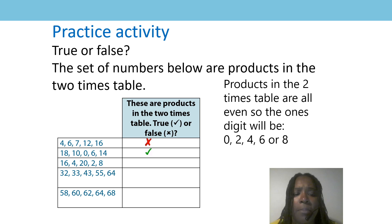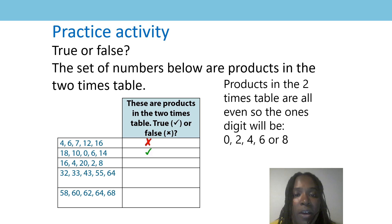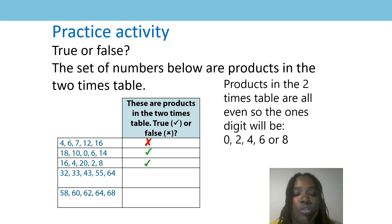What about the next set of numbers? 16, 4, 20, 2, 8. Was that a tick or a cross? Perfect — a tick would be correct, because all the ones digits are either 0, 2, 4, 6, or 8. So they are all even numbers and they would definitely be in our two times table.